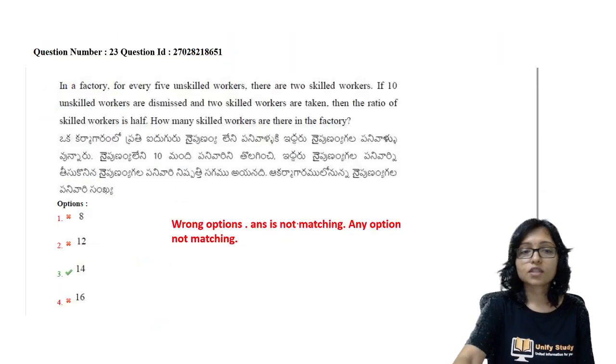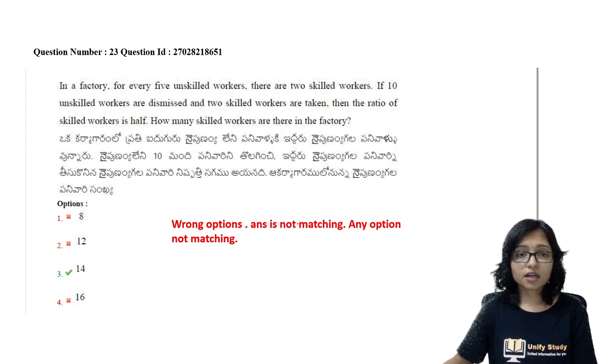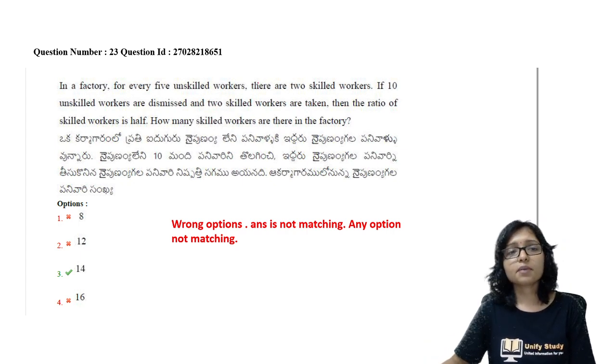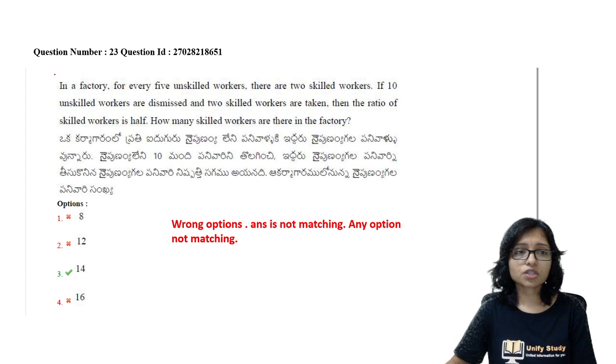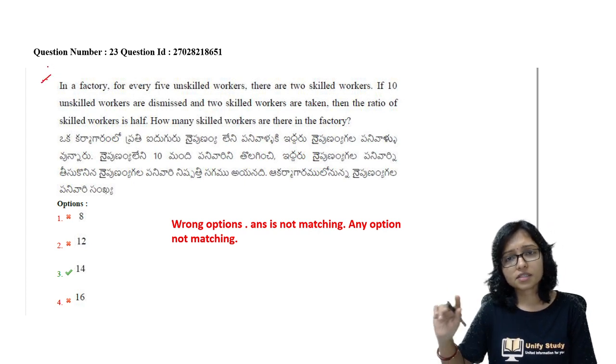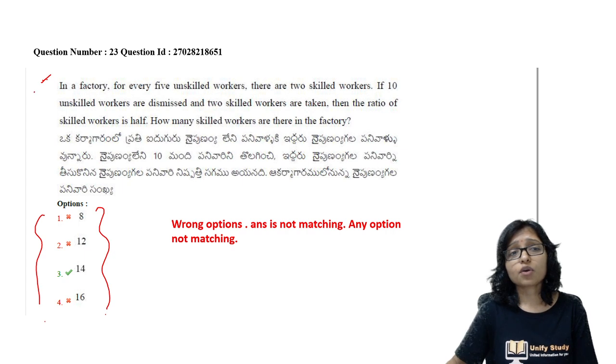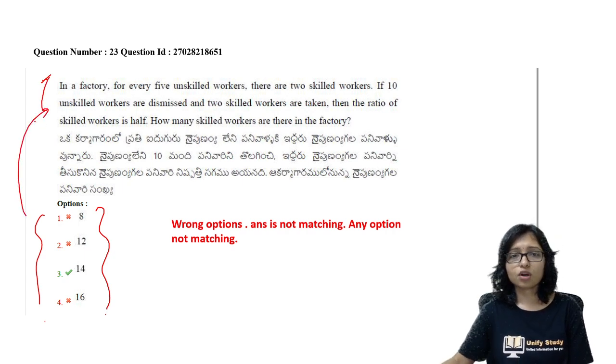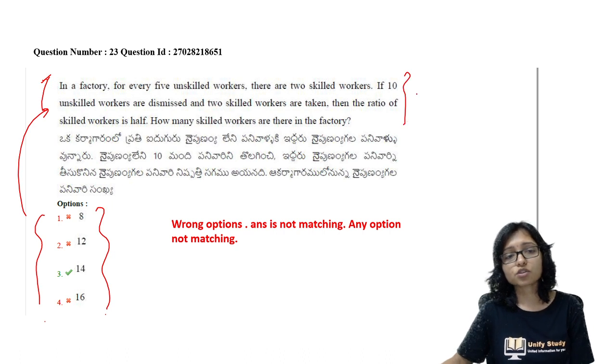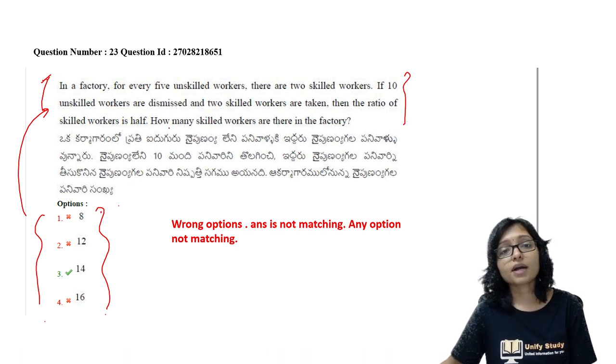Next one is paper one. I did not check that much, but still one question there is doubt from this question. This is a mathematical aptitude question. Actually, any answer will not match. They have given ratio, but according to this one, if I am doing backtracking also, anyone will not match according to the given condition. They provide the ratio but they ask total how many skilled workers are there.